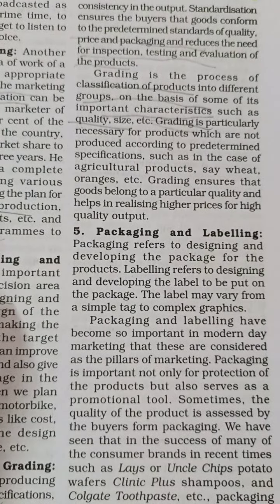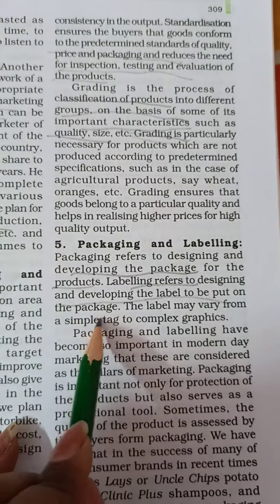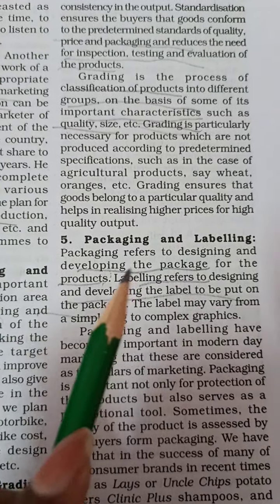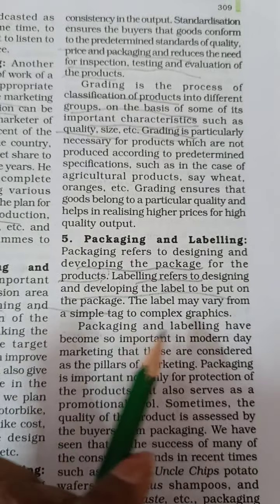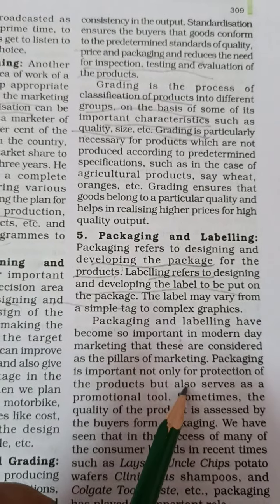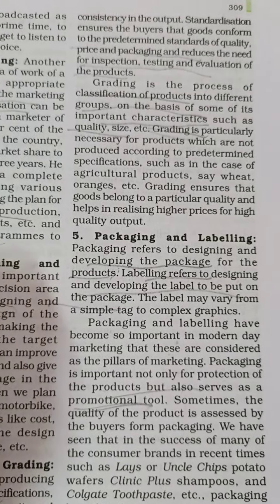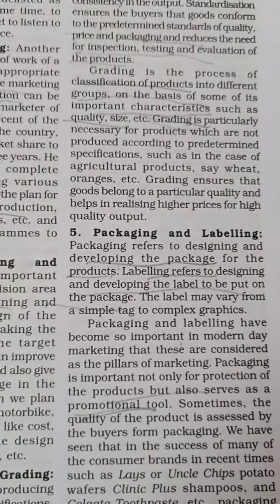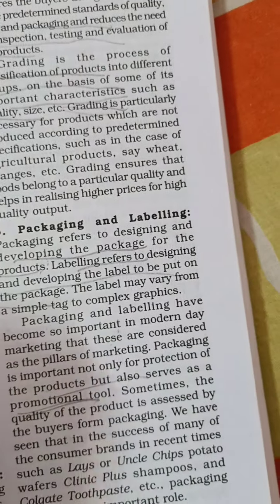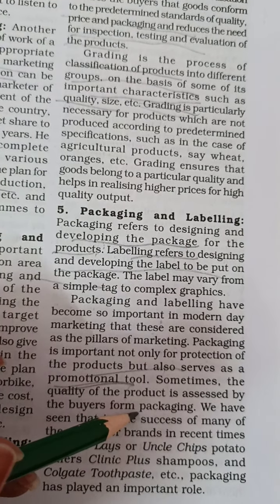Next is packaging and labeling. Packaging refers to designing and developing the package for the products. Labeling refers to designing and developing the label to be put on the package — how to design and pack it, and what to print on the label. Packaging and labeling have become so important in modern-day marketing that these are considered pillars of marketing. Packaging is important not only for protection of the products but also serves as a promotional tool. You often see canopies with names printed on them; when a delivery arrives, Amazon's box has its name printed — why? Because it promotes the brand. Sometimes the quality of the product is assessed by buyers from its packaging.